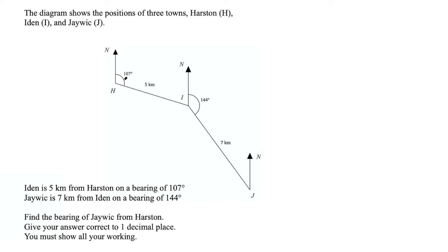Notice this information here is already marked. We have that distance of five kilometers and the letters—each point is given a letter. This is Iden, this is Harston, this is Jaywick. So Jaywick is seven kilometers from Iden, and Iden is five kilometers from Harston, and the bearings are marked there as well. We are looking for the bearing of Jaywick from Harston. So Jaywick is down here, Harston is up here, and what you want to first do is draw a line between these two points because the bearing of Jaywick from Harston is the angle in here. From north you go around until we get to this line and it will be that entire angle.